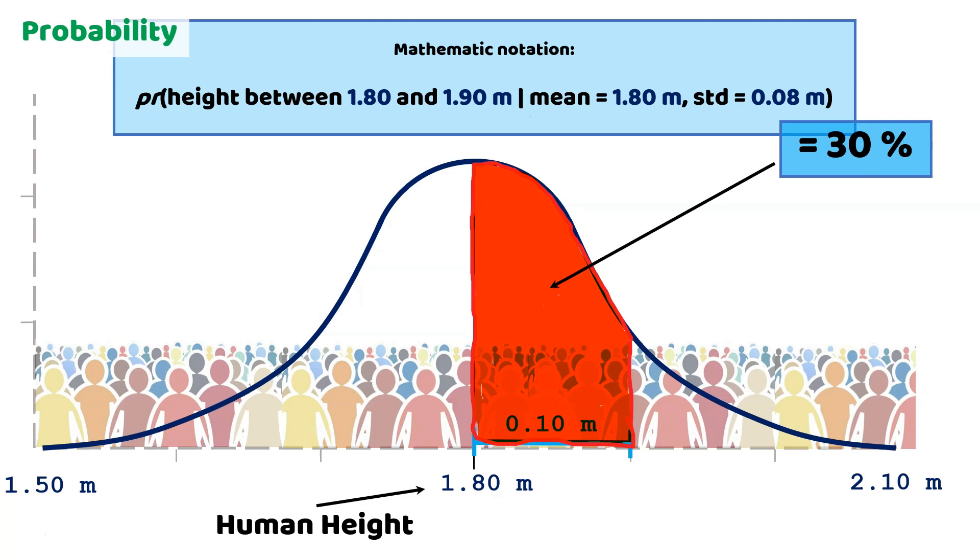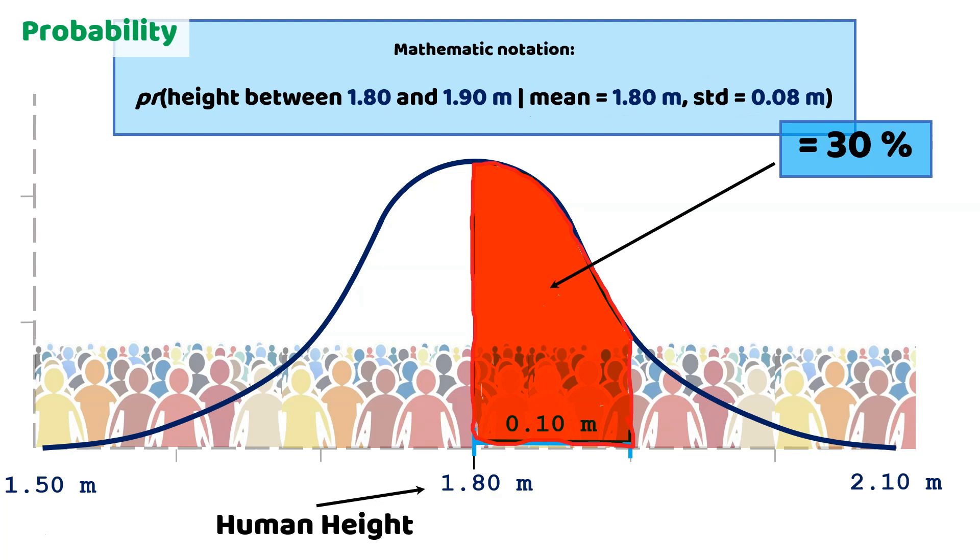This means the area under the curve is 0.30, meaning there is a 30 percent chance a randomly selected human is between 1.80 and 1.90 meters of height. If we change the left part of the equation, we change the criteria for selecting different human heights. For example, if we're interested in randomly taking a human that is higher than 1.90 meters of height, we get only 14 percent.